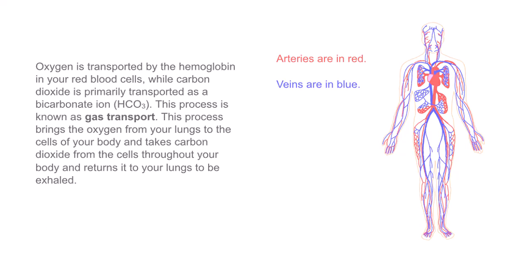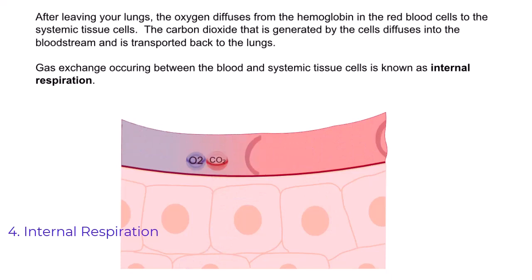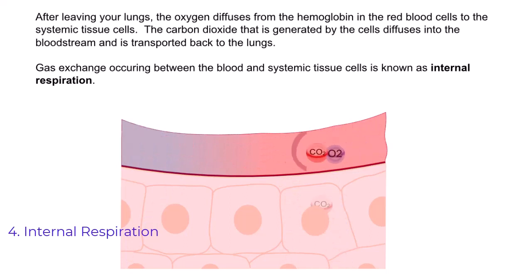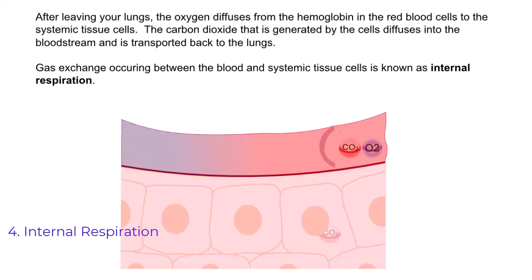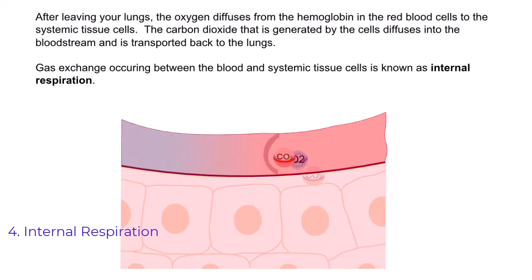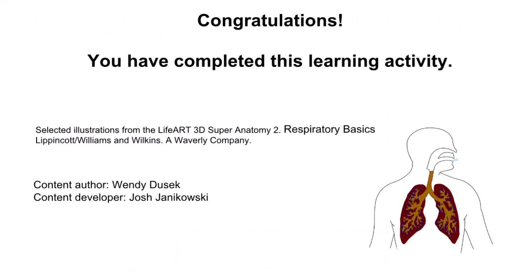After leaving the lungs, oxygen diffuses from the hemoglobin in the red blood cells to the systemic tissue cells. The carbon dioxide generated by the cells diffuses into the bloodstream and is transported back to the lungs. Gas exchange occurring between the blood and systemic tissue cells is known as internal respiration — and that is step four. Those are the respiratory basics.